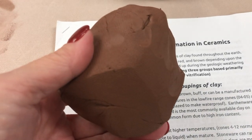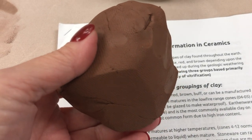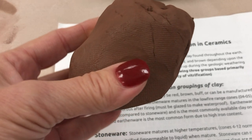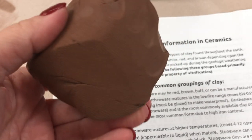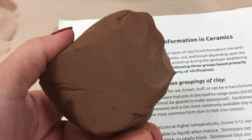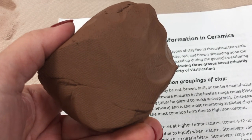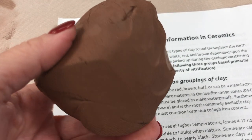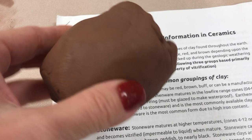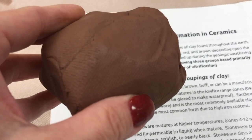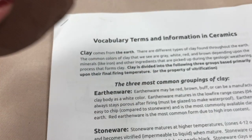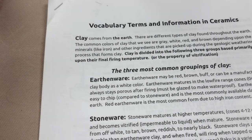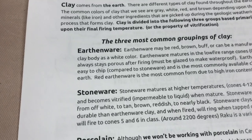The first grouping is earthenware. Earthenware is always low fire, and what we are using is red earthenware, although it can be other colors as well. Our red earthenware used at school is a grogless earthenware, which means that we can sponge it. When it fires, it turns an orangish-red color. That is low fire, and it stays porous after firing.